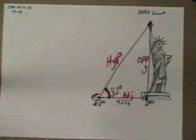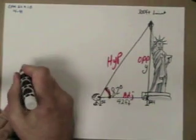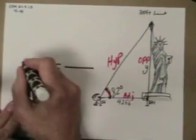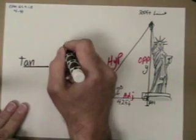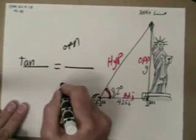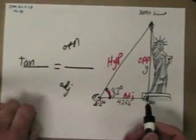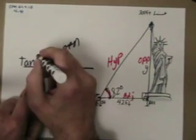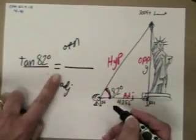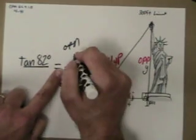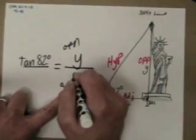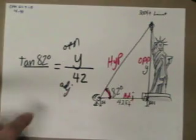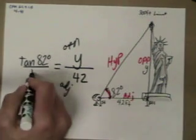Now, set up our ratio. I'm just writing these in to make it a little faster and easier for you. The tangent of 82 degrees needs to equal y over 42. Okay, and I'm going to put that over 1.